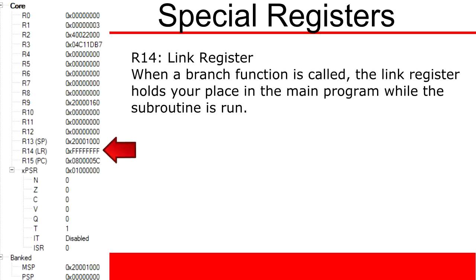R14 is called the link register, and is mainly used by branch functions to hold your place in the main program while you go off to some subroutine. When that subroutine is complete, you can then jump right back into your main program using the link register value as an indication of where you were.